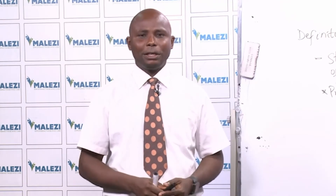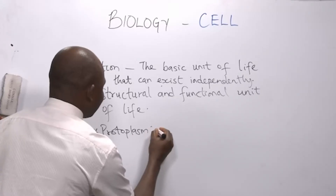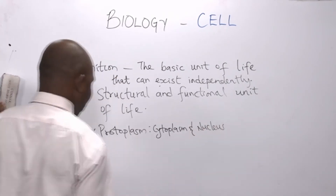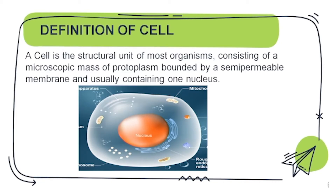A cell is bounded by a semi-permeable membrane and usually contains one nucleus. When you come across the word protoplasm, you may not see it labelled in a cell diagram because protoplasm is the living component of the cell — it consists of cytoplasm and the nucleus. So when we talk about protoplasm, we are referring to cytoplasm and the nucleus.